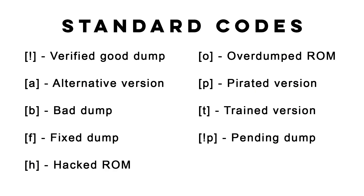There are also some other standard codes to consider. After the exclamation point there is: A for alternative version, B for bad dump, F for fixed dump, H for hacked — meaning it could have the graphics changed or overhauled, gameplay mechanics changed, or it could even be an entirely new game. O for over dump, P for pirated, T for trained meaning it has built-in cheats potentially, and exclamation P for pending.